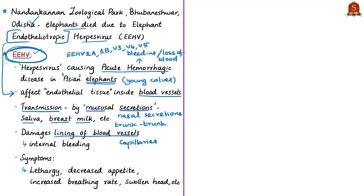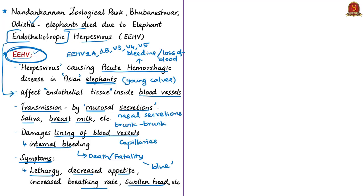In many cases, elephants suffer from internal bleeding with little outward manifestation, making identification very difficult. Internal bleeding leads to damage of one organ, subsequently many organs, and ultimately death. Symptoms of EEHV include lethargy, reduced or decreased appetite, increased breathing rate and heartbeat, blue coloration of the tongue, and swelling of the head of the elephant.